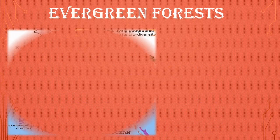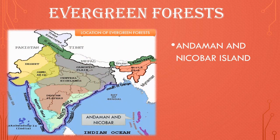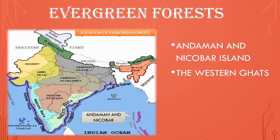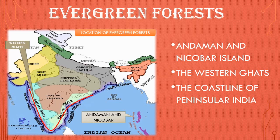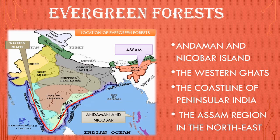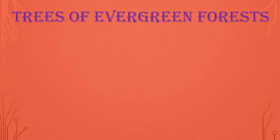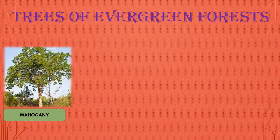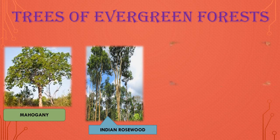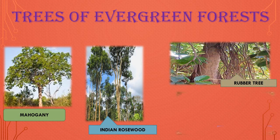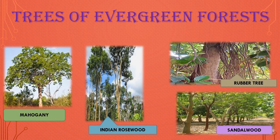Evergreen forests are found in the Andaman and Nicobar Islands, the Western Ghats, the coastal line of the Peninsula, and in the region of Assam in the northeast. Examples of trees found in evergreen forests include Mahogany, Indian rosewood, rubber tree, and sandalwood.